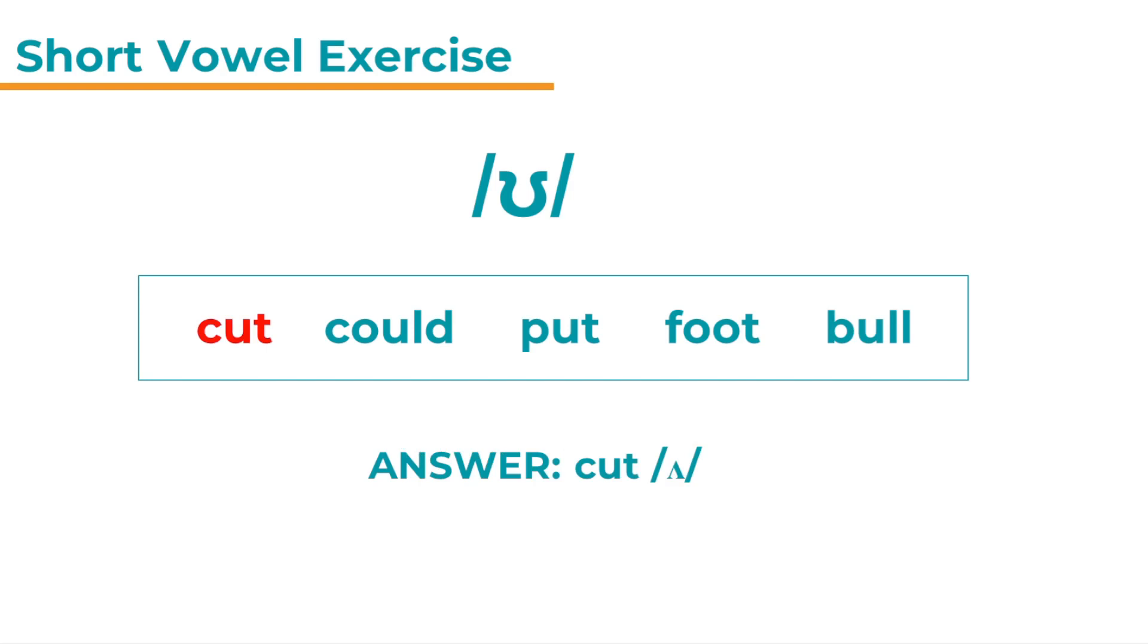Cut has an ʌ sound. And here you can see the ʊ sound. Sometimes it is represented by o-u. Sometimes by u. Sometimes by u and sometimes also by double o. So the spelling can change and vary.